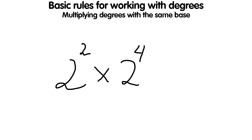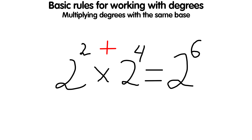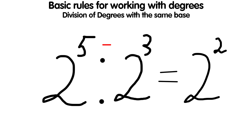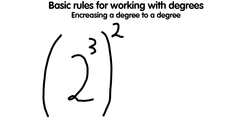Basic rules for working with degrees. When multiplying degrees with the same base, their exponents are added: for example, 2² times 2⁴ equals 2⁶. When dividing degrees with the same base, their exponents are subtracted: 2⁵ divided by 2³ equals 2². When raising a degree to a power, the exponents are multiplied: (2³)² equals 2⁶.